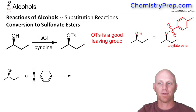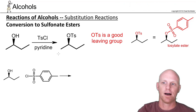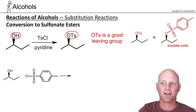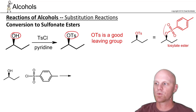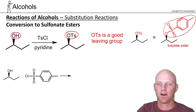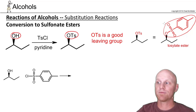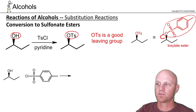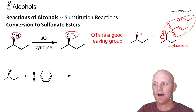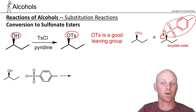We've got one last substitution reaction to talk about. We're going to turn our OH group into an OTs group. An OTs group is what we call a tosylate ester, and the whole point in converting an alcohol to a tosylate ester is that whereas an OH is a bad leaving group, this thing is a phenomenal leaving group — better than all the halides. The reason is if this oxygen were to leave, it would have a negative charge that's resonance-stabilized with all three oxygens, making it a very stable, very weak base — a great leaving group.